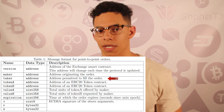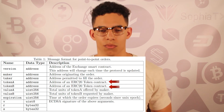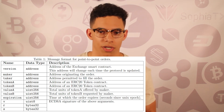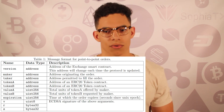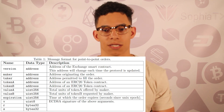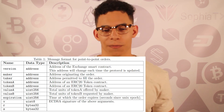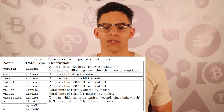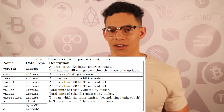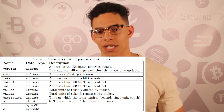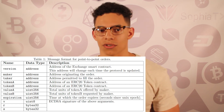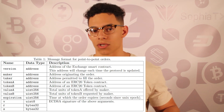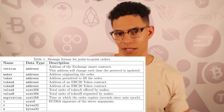Looking at the message format table for point-to-point orders: the first row is the address of the smart contract enabling those orders. The maker is the address originating the order; the taker is the address permitted to fill it. Token A and Token B are the tokens being exchanged, and Value A and Value B are the units of each token. The type uint256 is just a placeholder meaning unsigned integer of max length 256 bits — essentially just a number. Variables V, R, and S comprise the ECDSA signature, which stands for Elliptic Curve Digital Signature Algorithm.